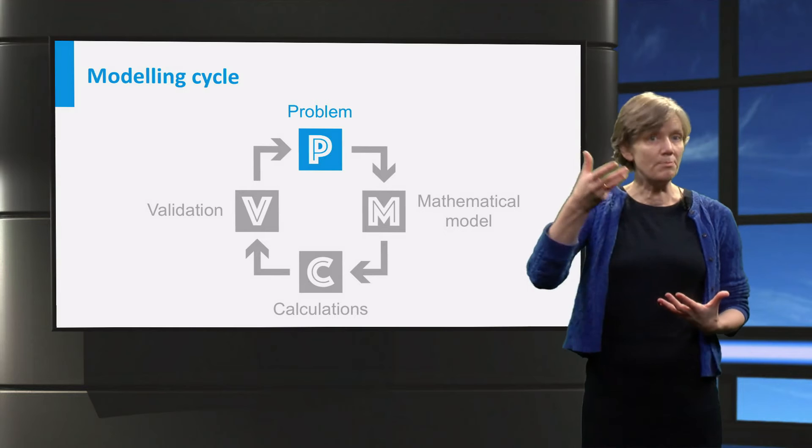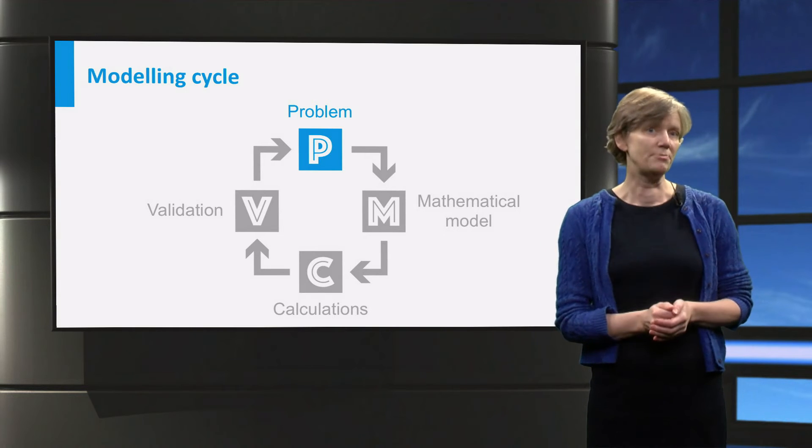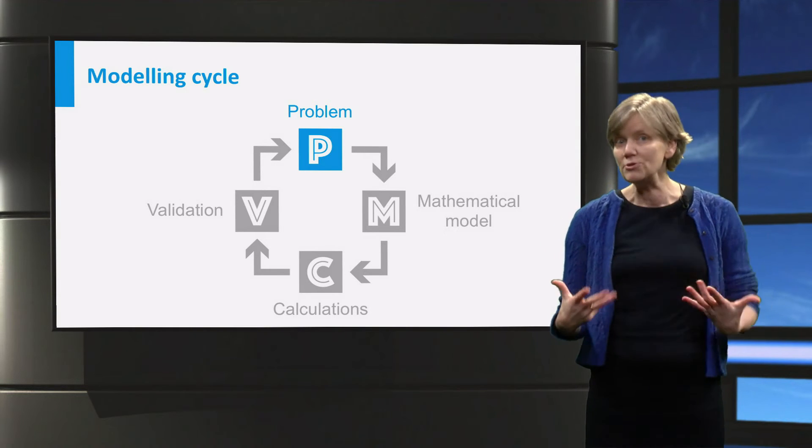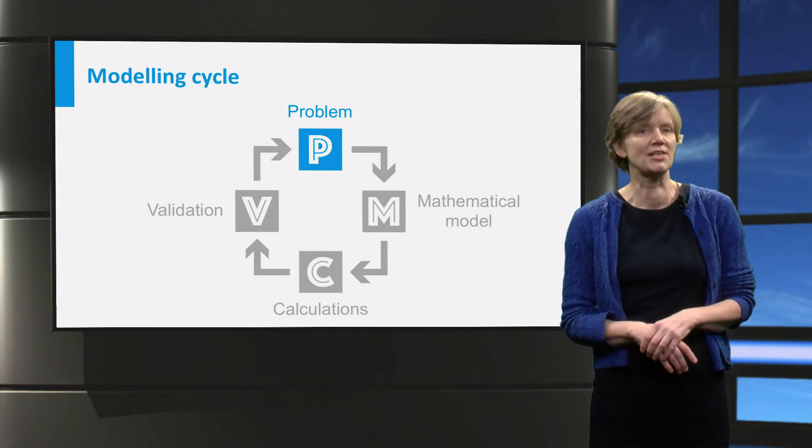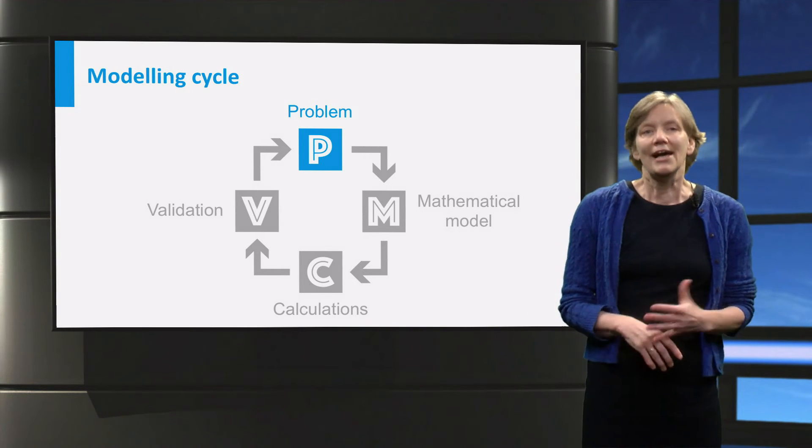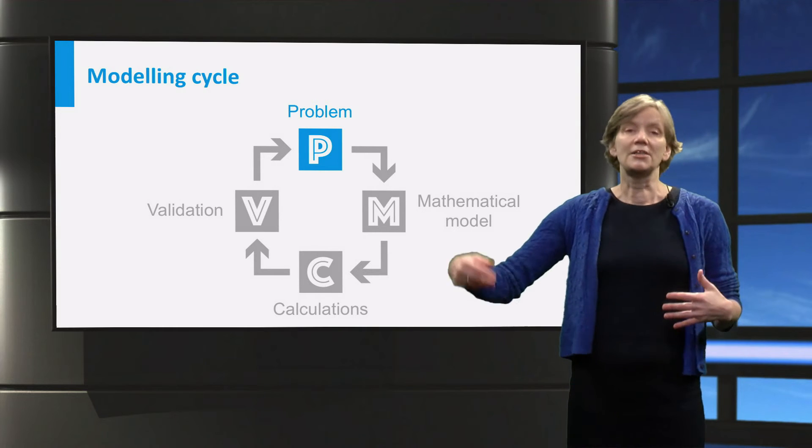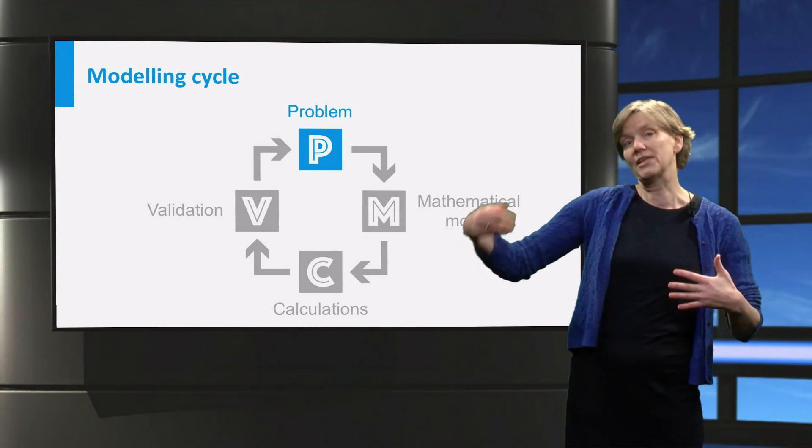It might even be that the problem we started with has to be changed. It might be too general, and then the problem has to be specified more precisely. And so we go round and round until the problem is solved satisfactorily.